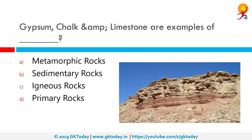Gypsum, chalk and limestone are examples of what? They are all sedimentary rocks. Sedimentary rocks are rocks formed from sediment. They are deposited over time and often show layers which can be seen in cliffs. Other types of rocks are igneous rocks and metamorphic rocks. Sediments are usually formed from matter which falls to the bottom of oceans and lakes.